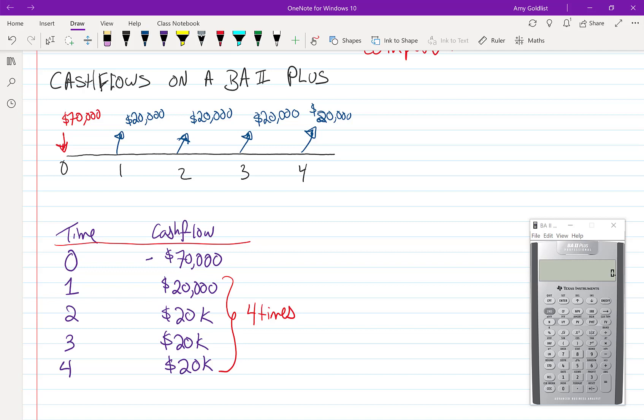The first thing we're going to do is go into our cash flow worksheet. We just press the CF or cash flow button. What you'll see often is all the things you had in a previous question. So every time you do this, the first thing you're going to do is go second, clear.